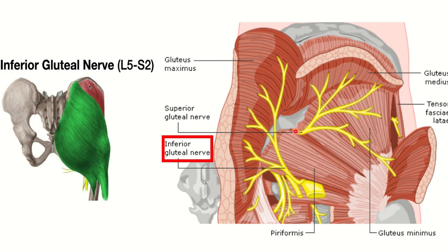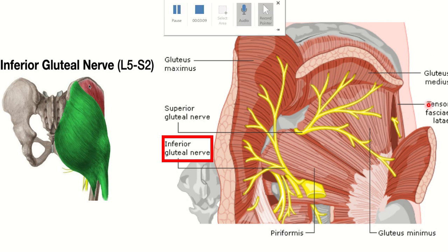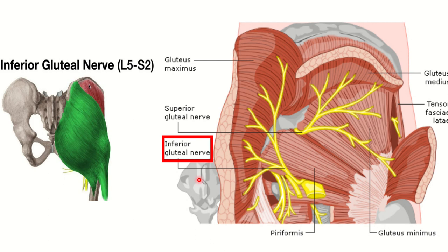The superior gluteal nerve supplies three important muscles: gluteus medius, gluteus minimus, and tensor fascia latae. It is a common misconception that the superior gluteal nerve should supply the gluteus maximus because it is the most superior muscle, but that is not true. This is a frequent question in MRCS exams because it is easy to think gluteus maximus is supplied by the superior gluteal nerve, but it is not.